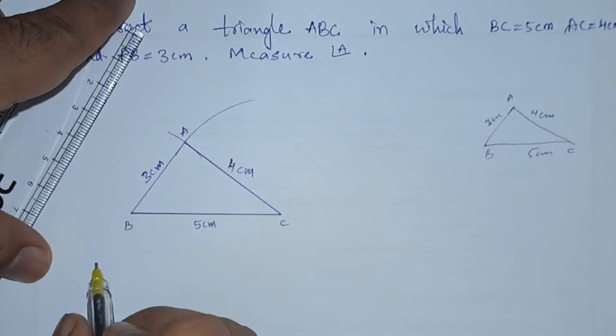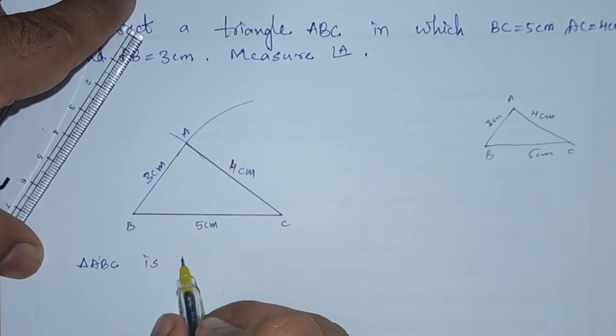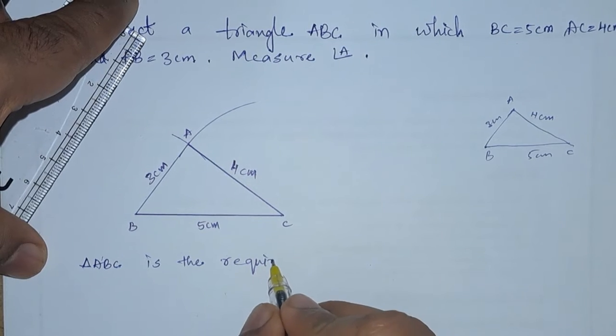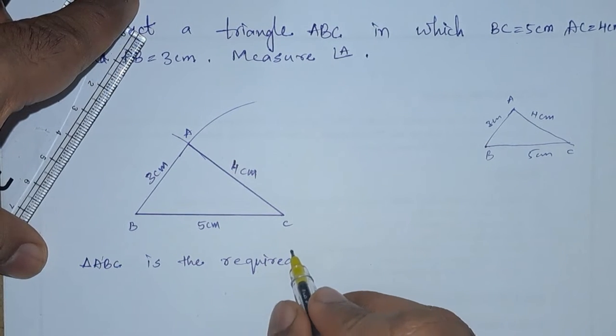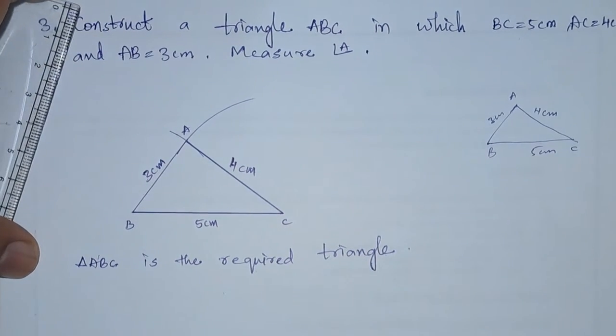Finally, we can write that triangle ABC is the required triangle. But they ask us to find angle A.